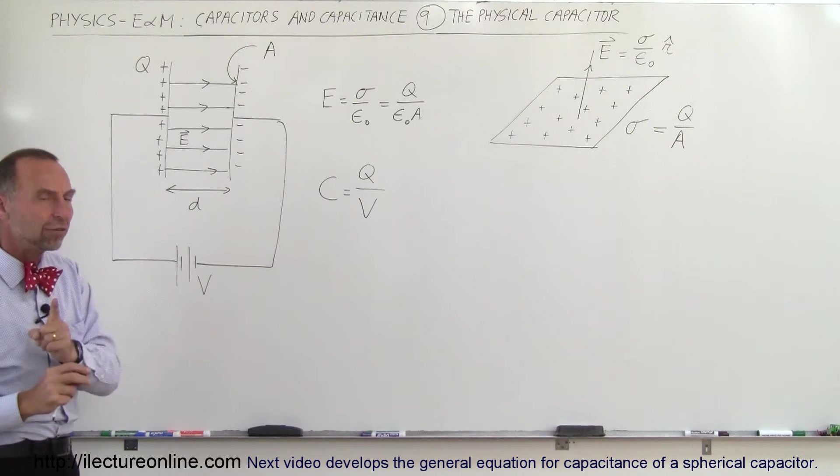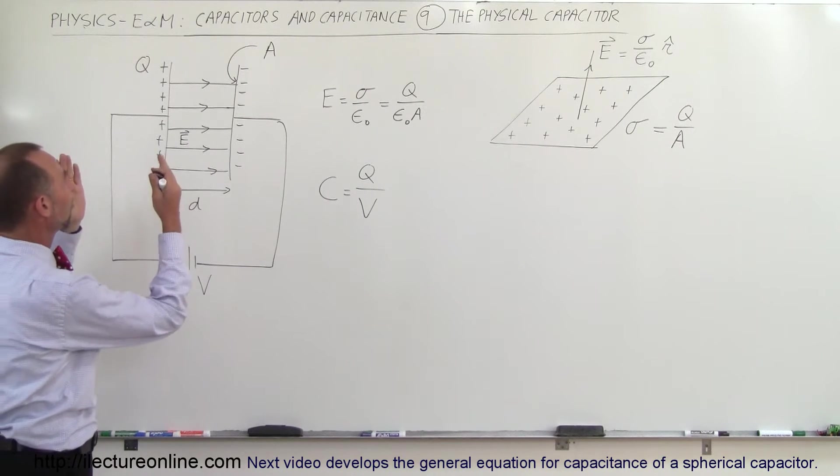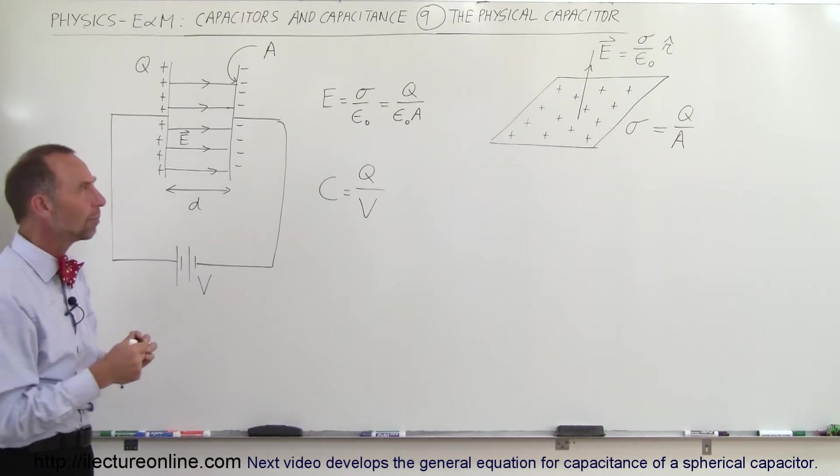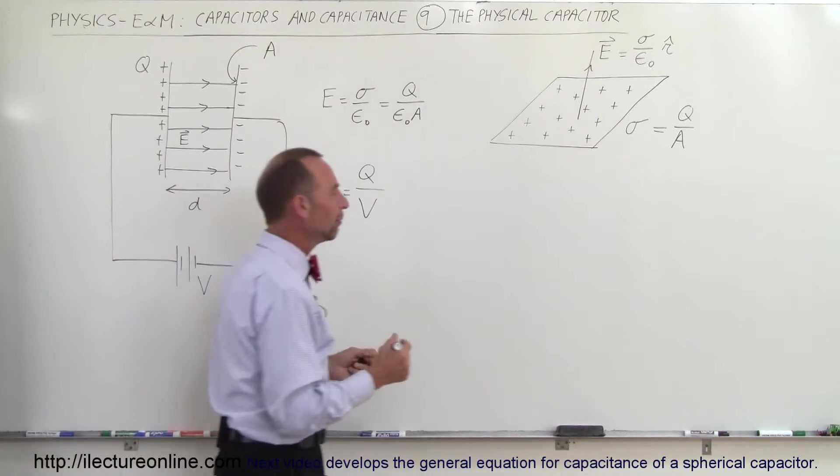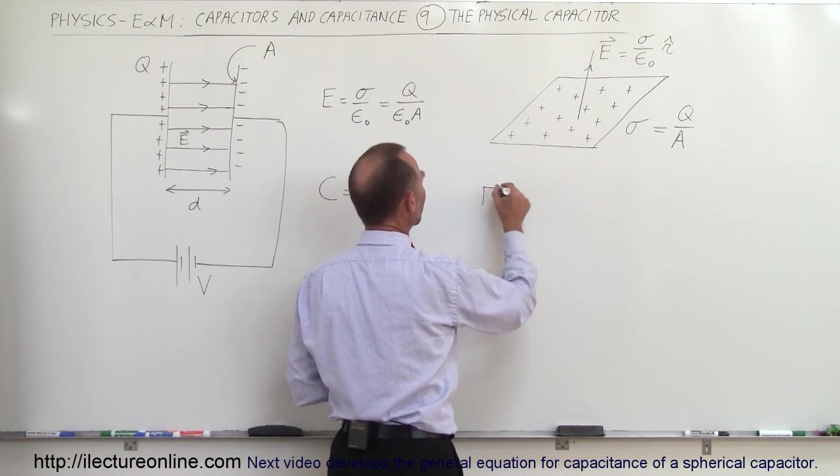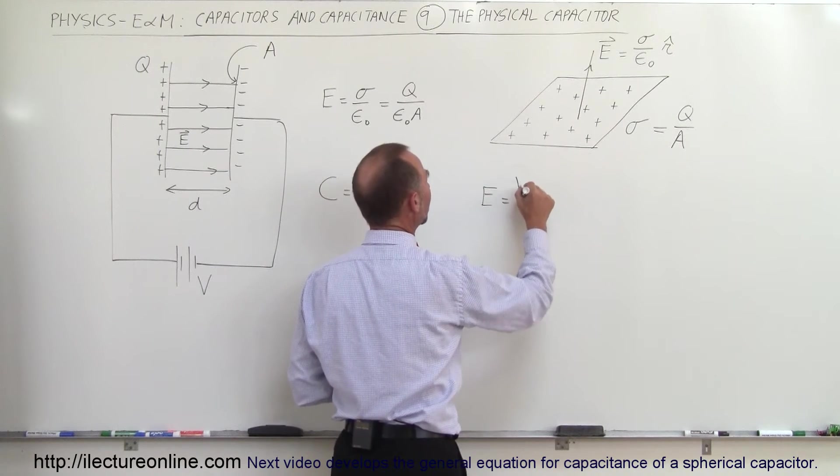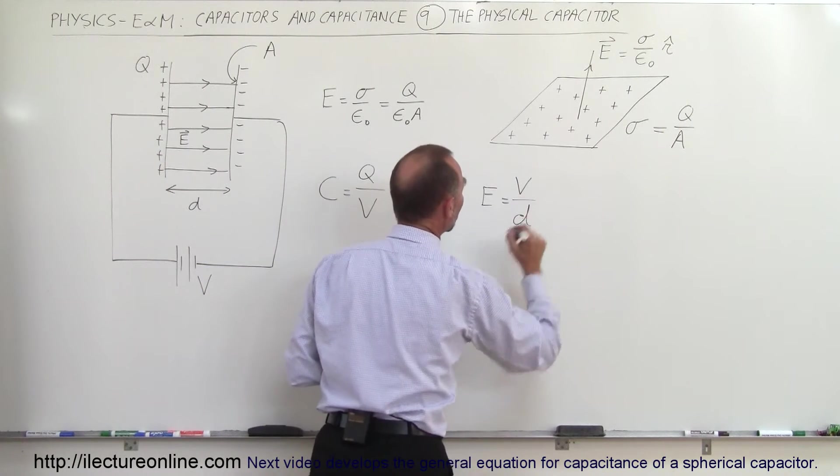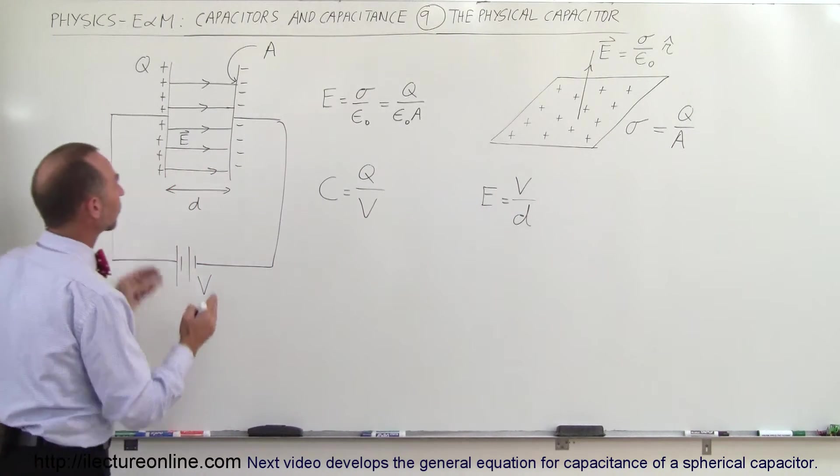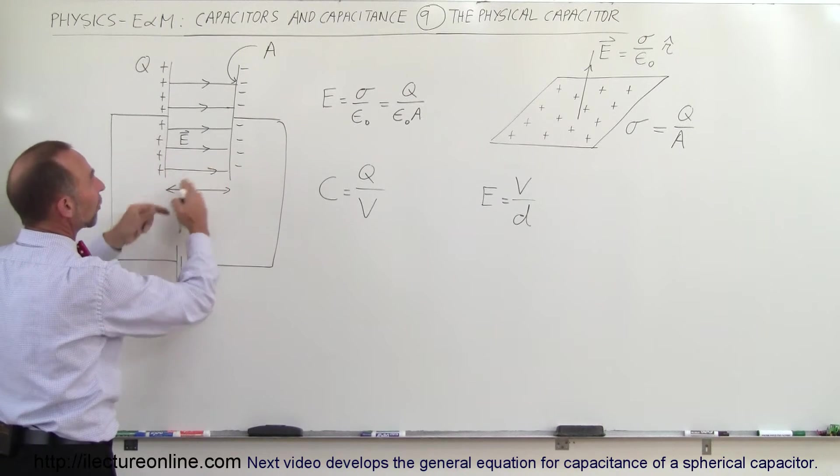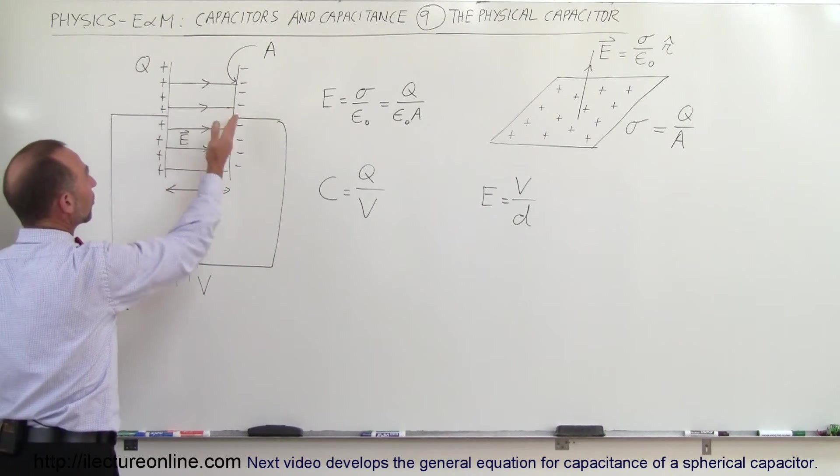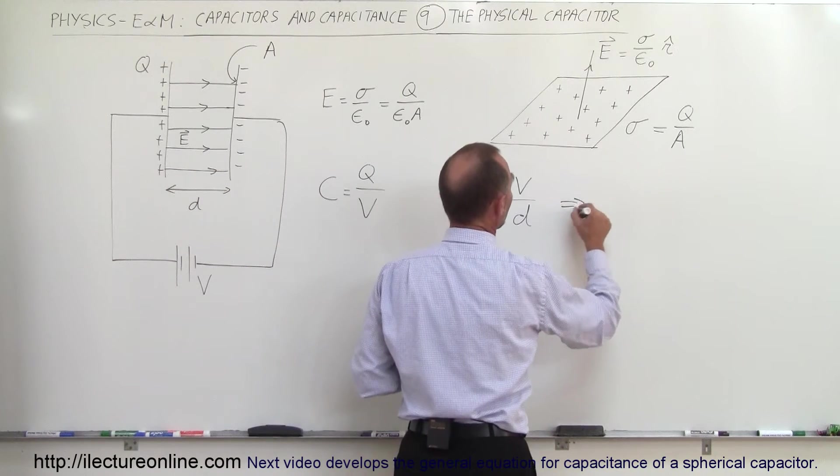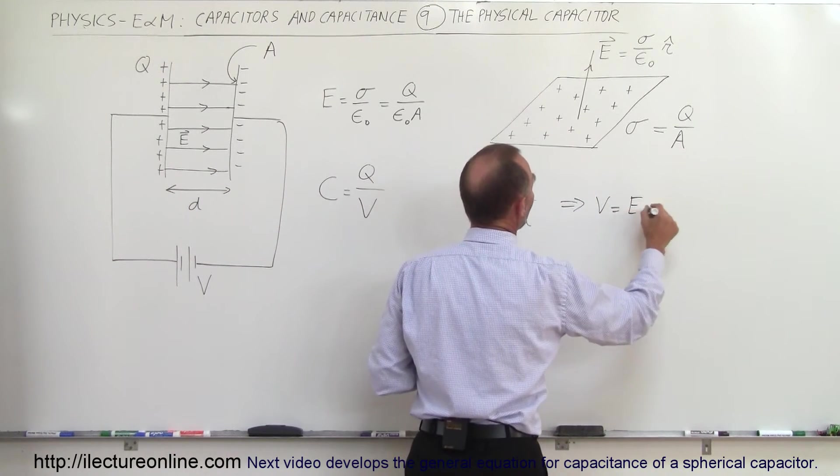But how do we find the capacitance of a capacitor as a function of its physical dimensions? Well, here we have to find a relationship between the electric field and the voltage. We know that the electric field can be defined as the difference of the voltage between the two plates divided by the distance between them. So the strength of the electric field is also a function of what the potential difference is divided by the distance between them, because we know that V is equal to E times D.